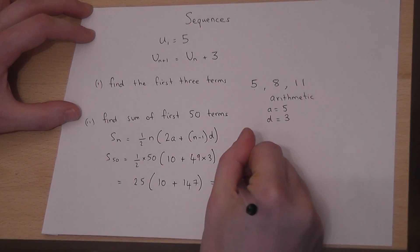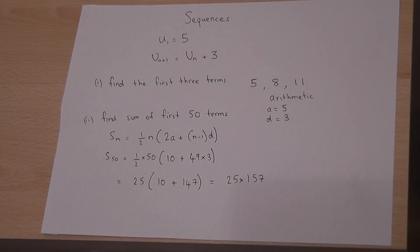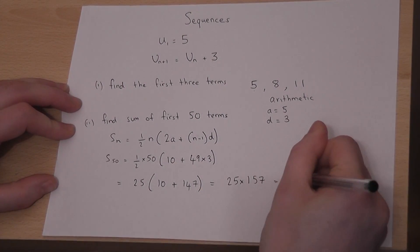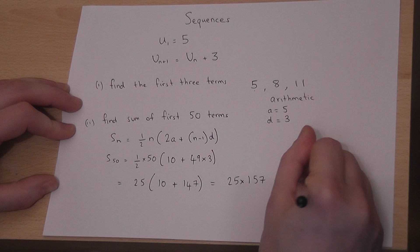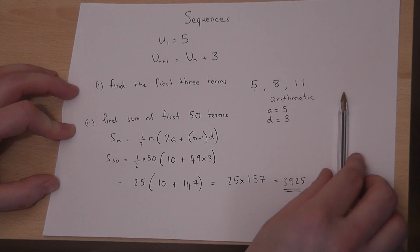So we have to work out 25 times 157. We put that into our calculator, press enter, and get 3925. So that is the sum of the first 50 terms.